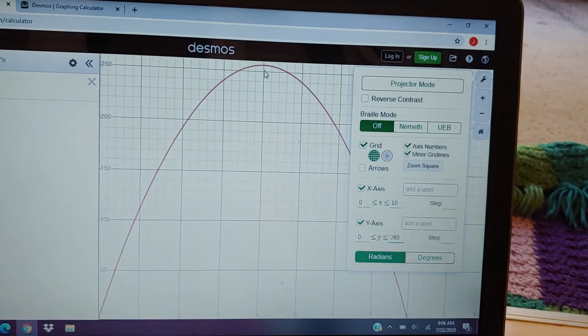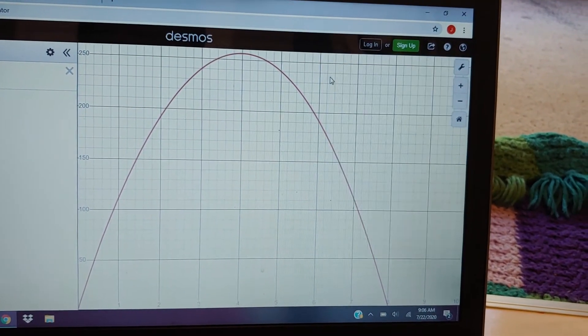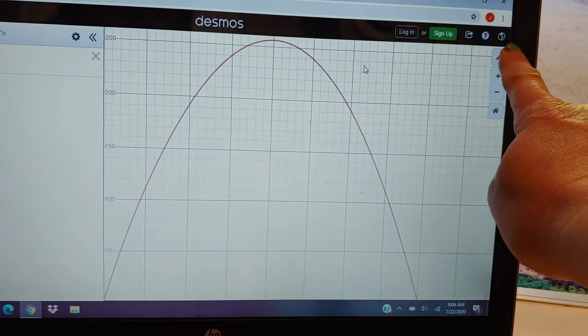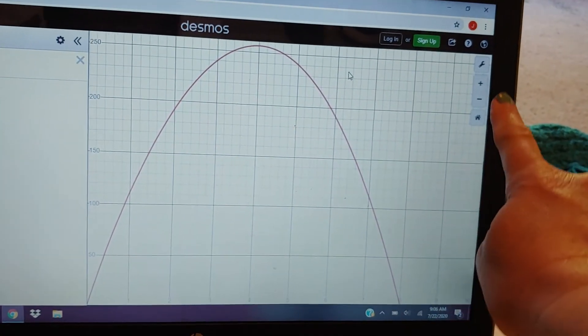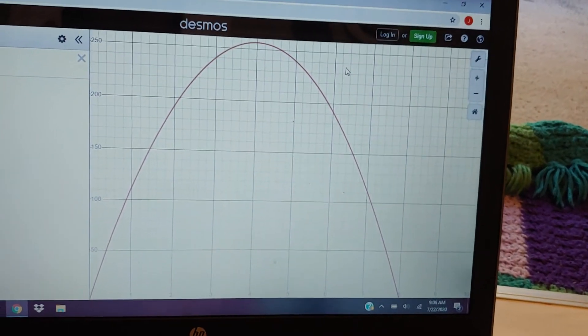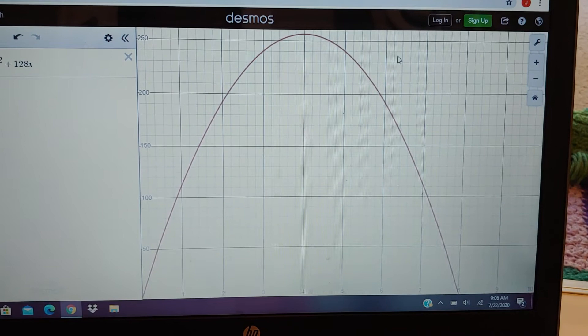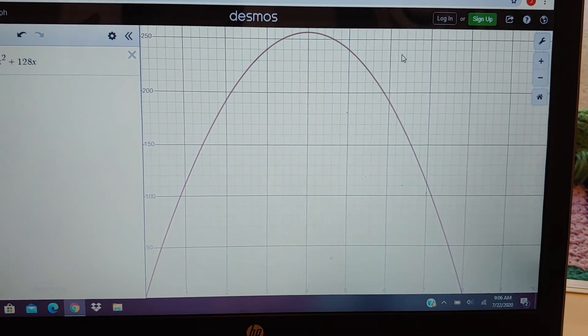So again, this is just kind of playing around with it. Make sure that as you're graphing things, you can either use the wrench to choose your window or you could zoom in and zoom out. So this is the graph of the parabola that I will be using in my first example in the next video.